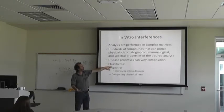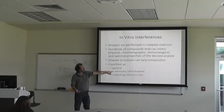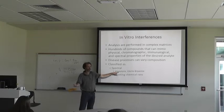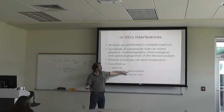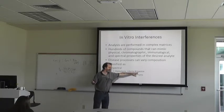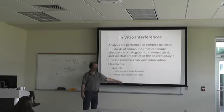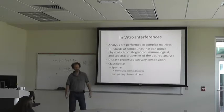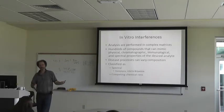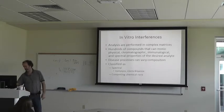They're classified as spectral interferences such as hemolysis — the heme is going to absorb light. Icteria is the bilirubin, and it's going to absorb light also. Or lipemia is going to scatter the light. Or you can have competing chemical reactions — an example is caffeine and theophylline, which will compete with each other for their antibody binding sites.